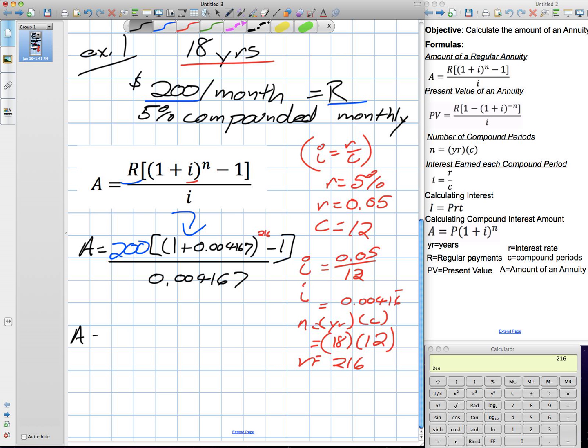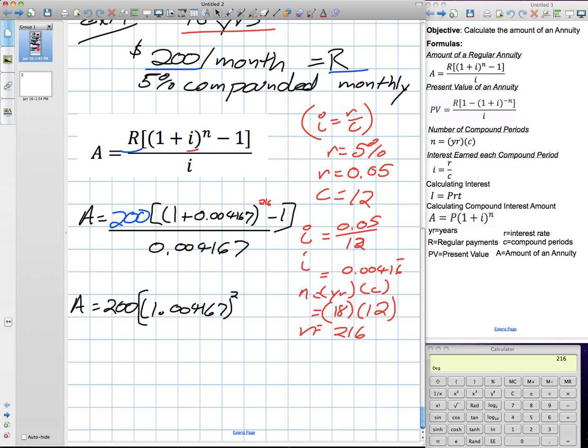So it looks complex. We have to follow BEDMAS when calculating this. The first thing I'm going to do is deal with the inside of the brackets. According to BEDMAS, many people will start to subtract the 1 first. You guys need to deal with the exponent first. So we have 1.004167 to the power of 216.